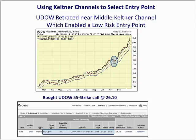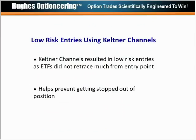Here's one more example — UDAO, the leveraged Dow Jones Industrial Average fund. We can see a very strong uptrend. We waited until mid-November when it retraced towards the middle Keltner channel and bought the 55 strike call at $26.10. UDAO rallied after our entry price. In all these examples, the Keltner channels resulted in low risk entries and the ETFs didn't retrace much from the entry point.